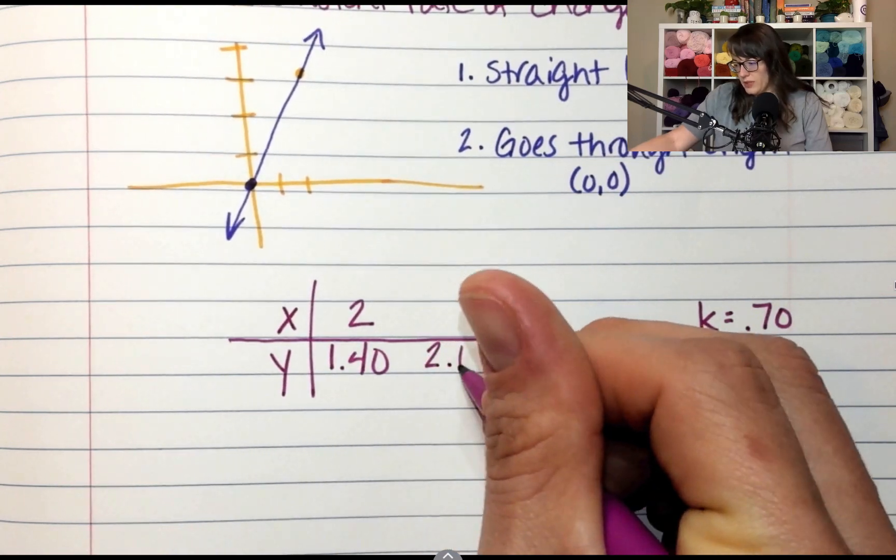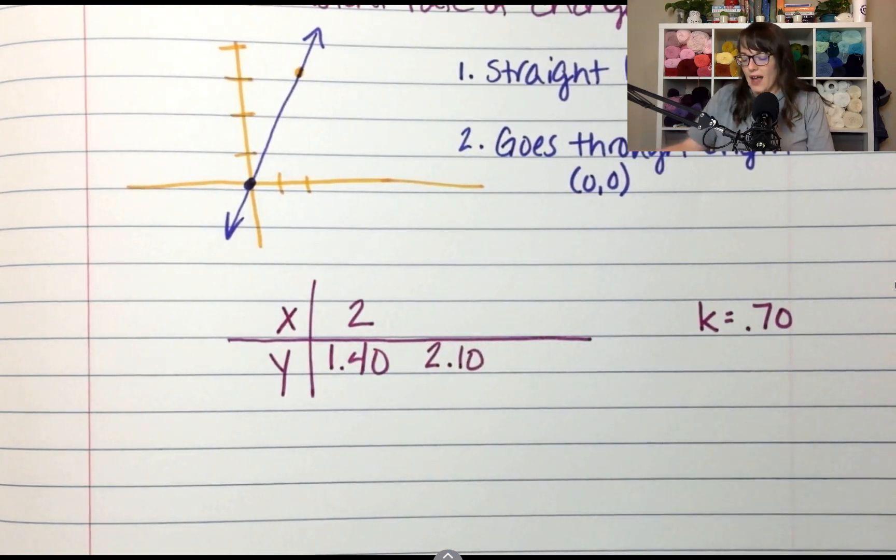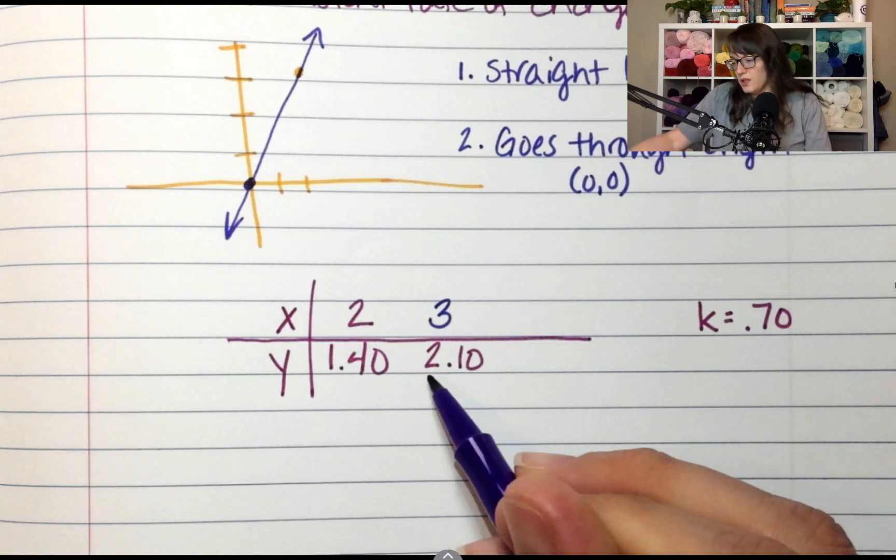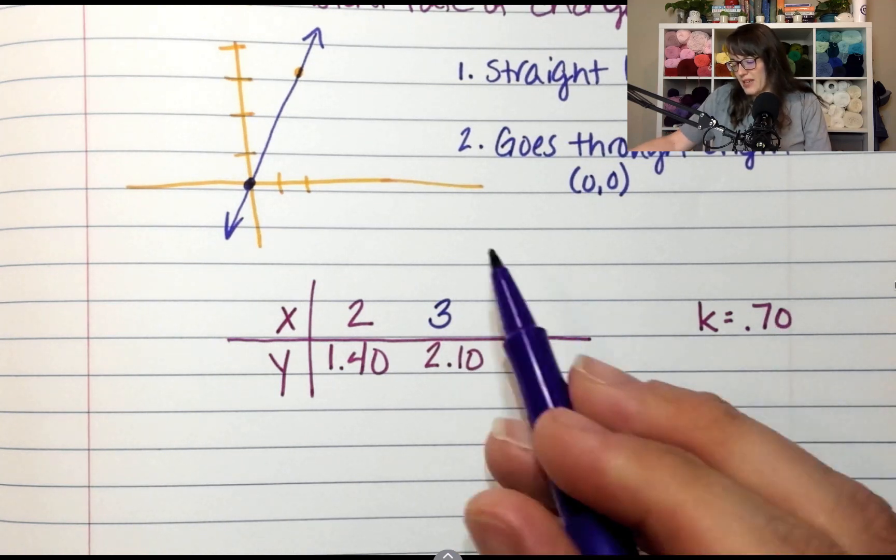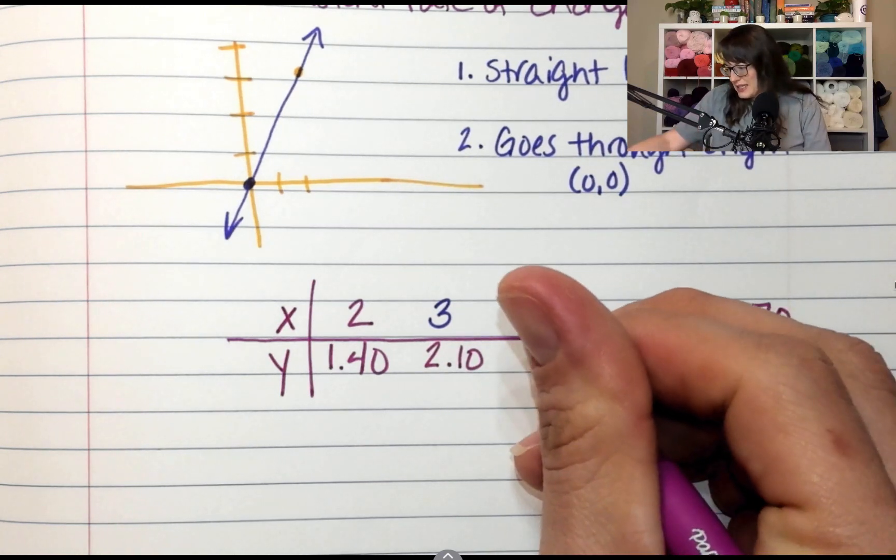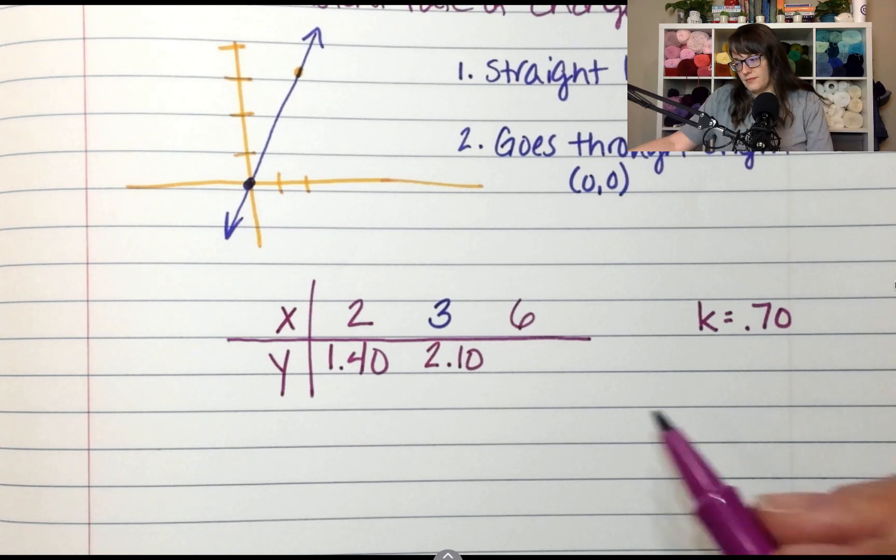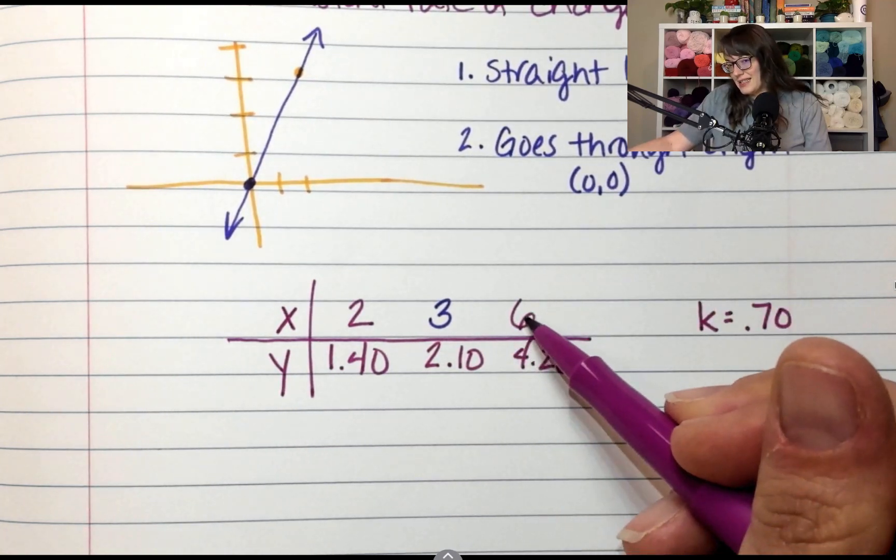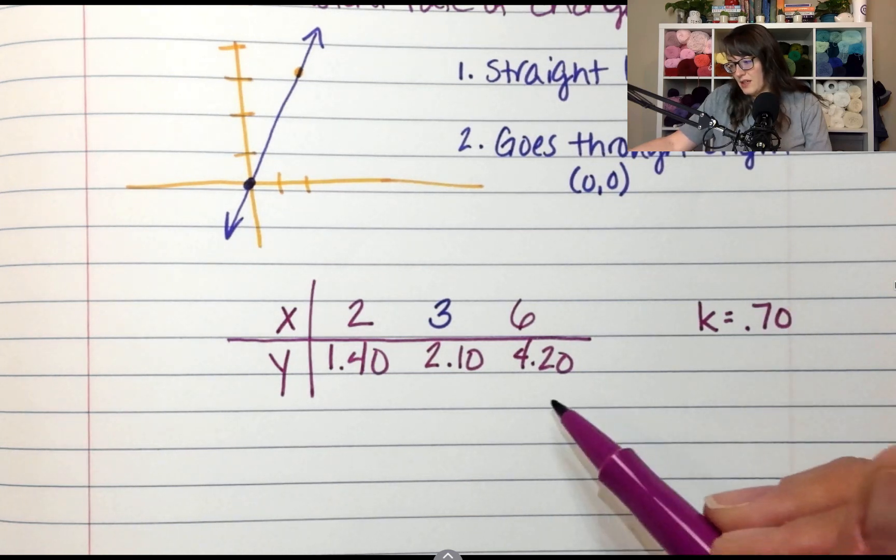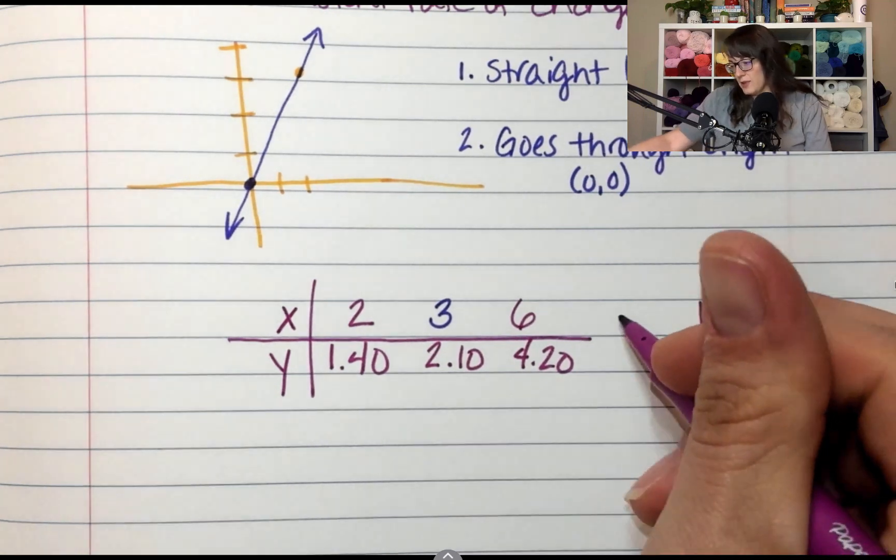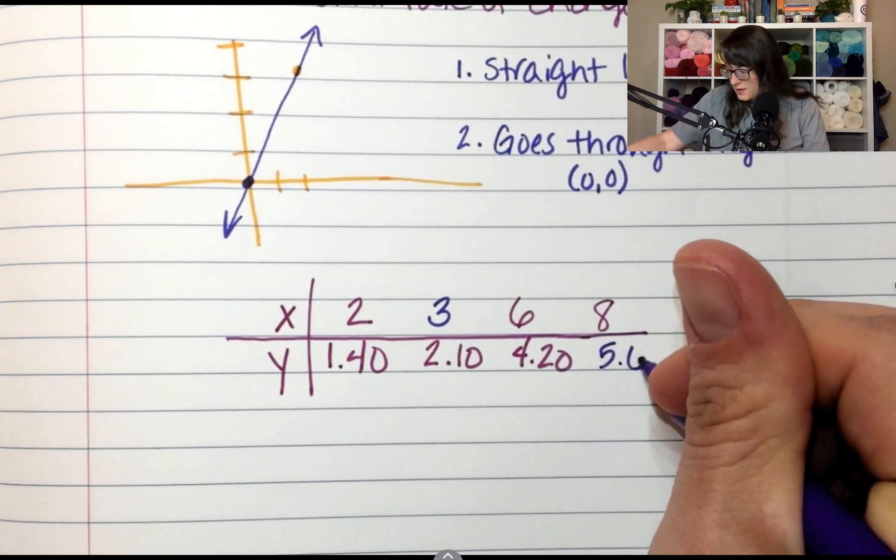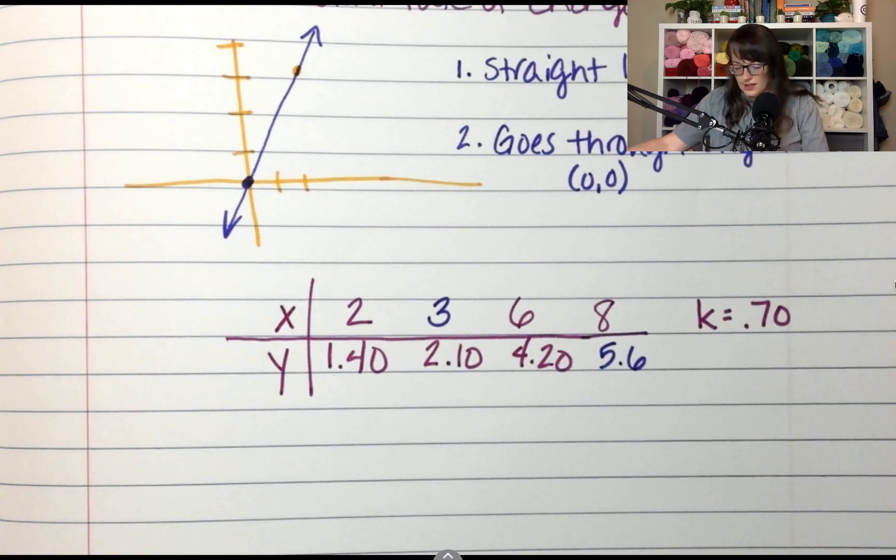How would you go backwards from 2.10? How much is x if y is 2.10? 3, because 3 times 0.7 is 2.1, or 2.1 divided by 0.7 is 3. What if it's 6? How much is y? 4.2, because 6 times 0.7 is 4.2. What about 8? Last one. 5.6 because 8 times 0.7 is 5.6.